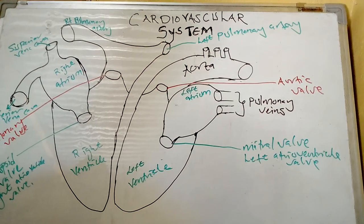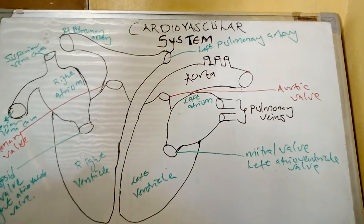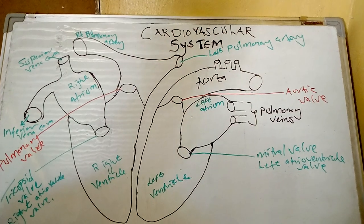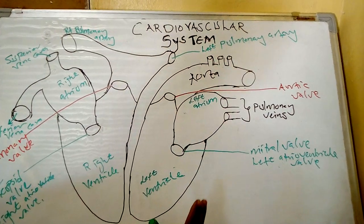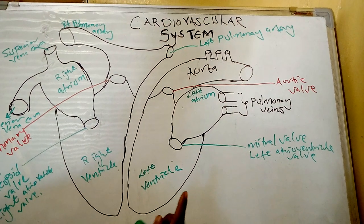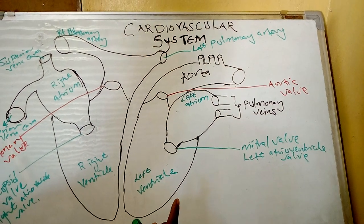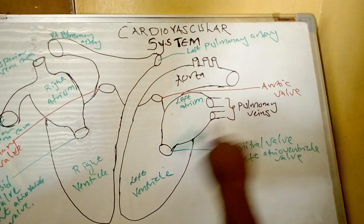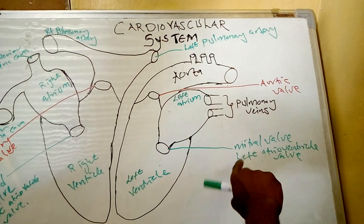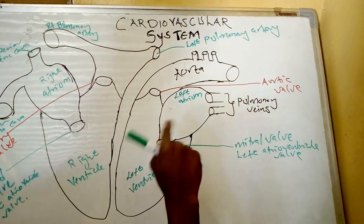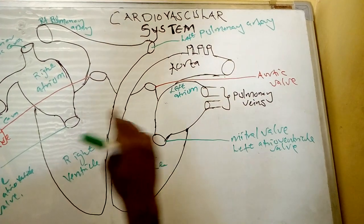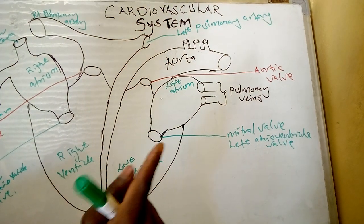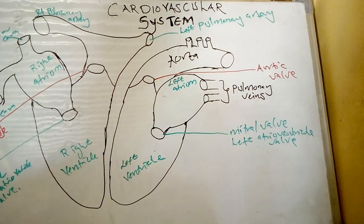The pulmonary arteries are the only arteries that carry deoxygenated blood, while the pulmonary veins are the only veins that carry oxygenated blood. Remember: artery means taking blood away from the heart, while vein means bringing blood towards the heart.